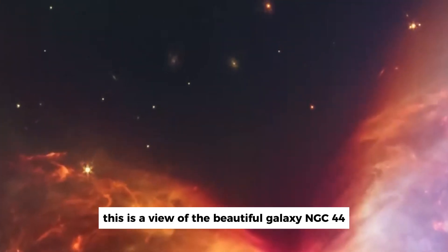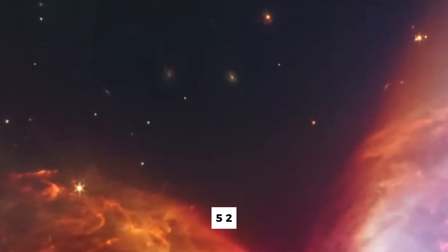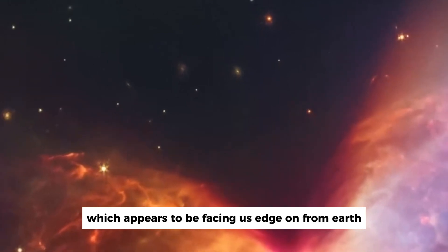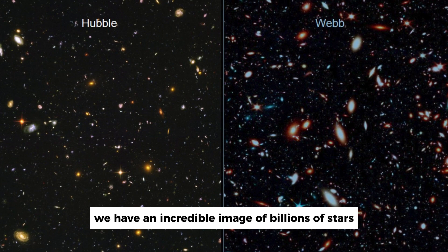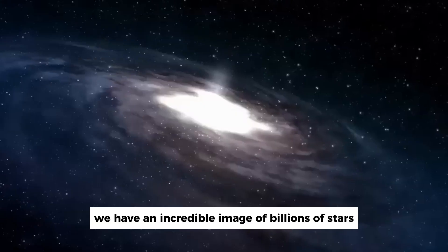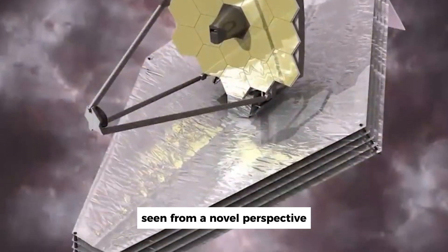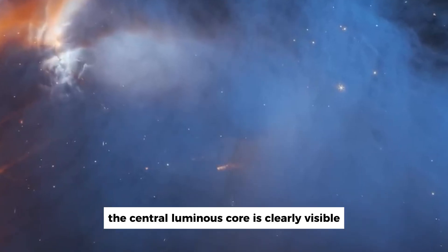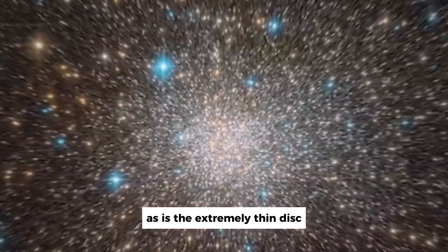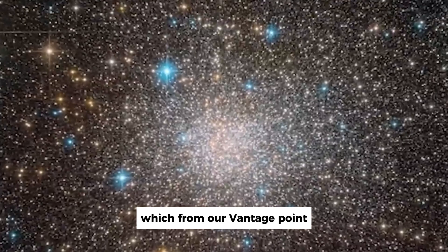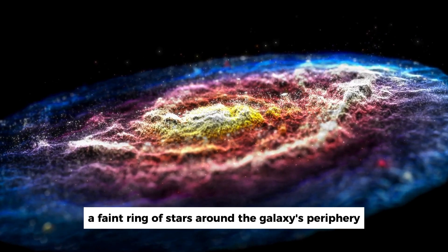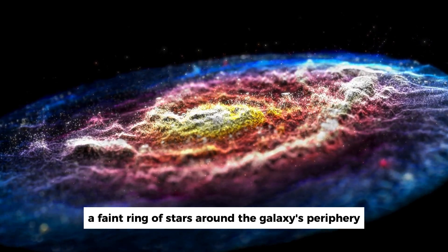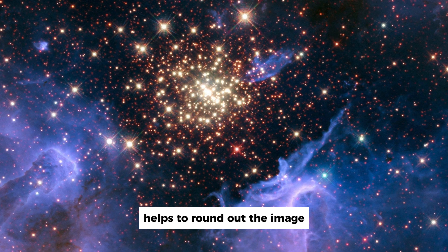This is a view of the beautiful galaxy NGC 4452, which appears to be facing us edge-on from Earth. As a result, we have an incredible image of billions of stars seen from a novel perspective. The central luminous core is clearly visible, as is the extremely thin disk, which from our vantage point appears to be a perfectly straight line.